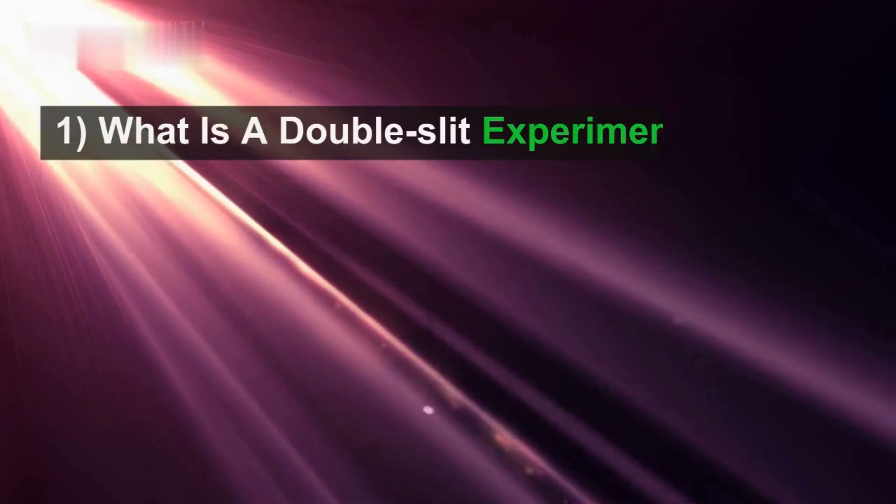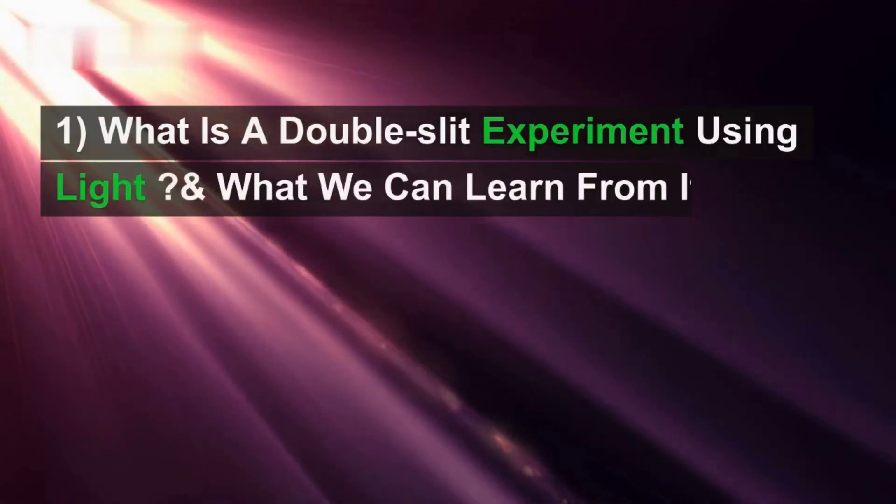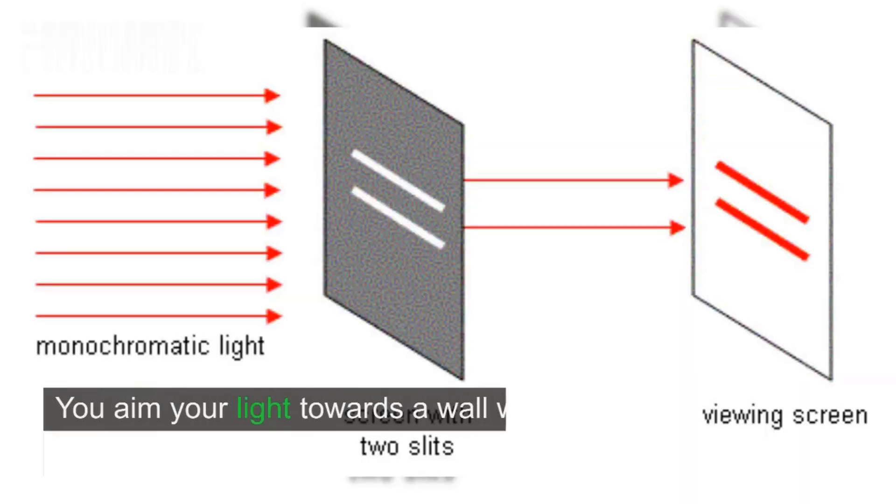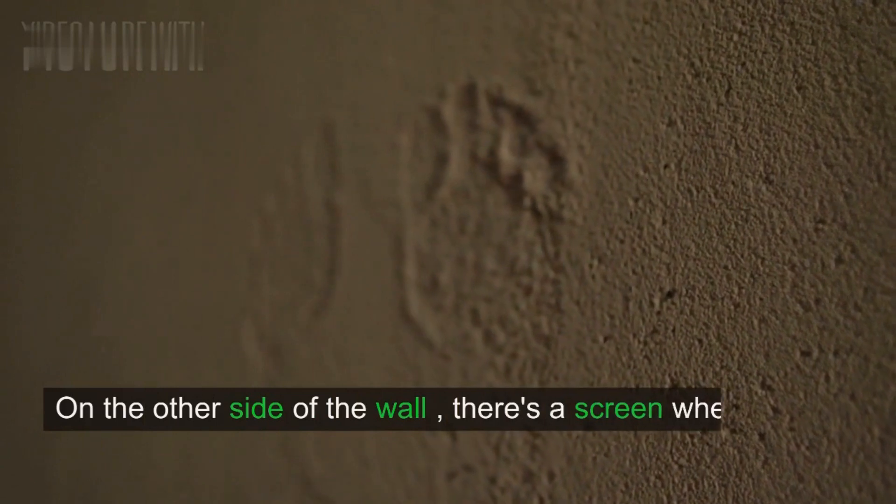What is a double-slit experiment using light, and what can we learn from it? You're in a dark room with nothing but a trusty flashlight. You aim your light towards a wall with not one, but two tiny openings. On the other side of the wall, there's a screen where you can see what happens.